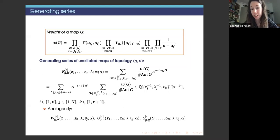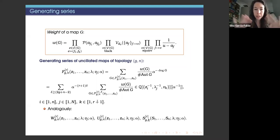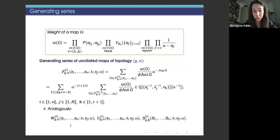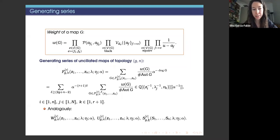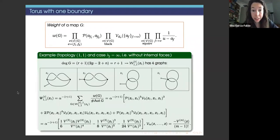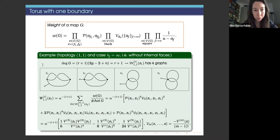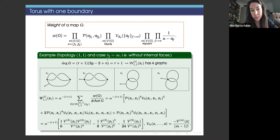Now I give some relations among the sets of maps. Using bijective combinatorics, we relate all these sets. The relation between unciliated and ciliated maps: taking derivatives amounts to adding cilia. The disk and cylinder topologies (0,1) and (0,2) are special. We can also relate multi-ciliated maps to ciliated maps by reducing one by one the degree of each white vertex, ending up with uniciliated maps.